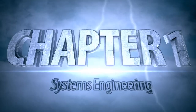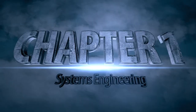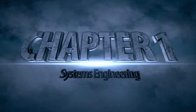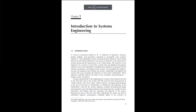Systems Engineering. A system is defined to be a collection of hardware, software, people, facilities, and procedures organized to accomplish some common objectives. The stakeholders for the system hold these objectives. Never forget that the system being addressed by one group of engineers is the subsystem of another group and the supersystem of yet a third group.